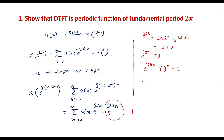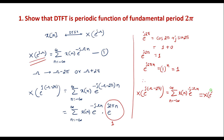Therefore, since e^{j2πn} = 1, I can write X(e^{j(ω−2π)}) = summation from n = −∞ to ∞ of x(n) e^{−jωn}, which equals X(e^{jω}). So by considering ω replaced by ω − 2π, we get X(e^{j(ω−2π)}) = X(e^{jω}), which means DTFT is a periodic function with period 2π.